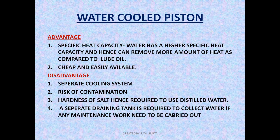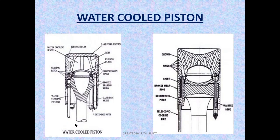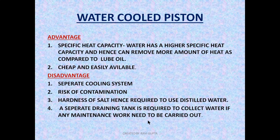A separate drain tank is required to collect water if any maintenance work needs to be carried out. When piston maintenance is needed, the whole pipeline and accumulated cooling water need to be drained. Some contamination is present in this water, so a separate drain tank is made where the cooling medium water is collected, treated, and discharged overboard through the OWS. So these are the advantages and disadvantages of the water cooled and oil cooled piston. I hope you understand — please share and like the video.